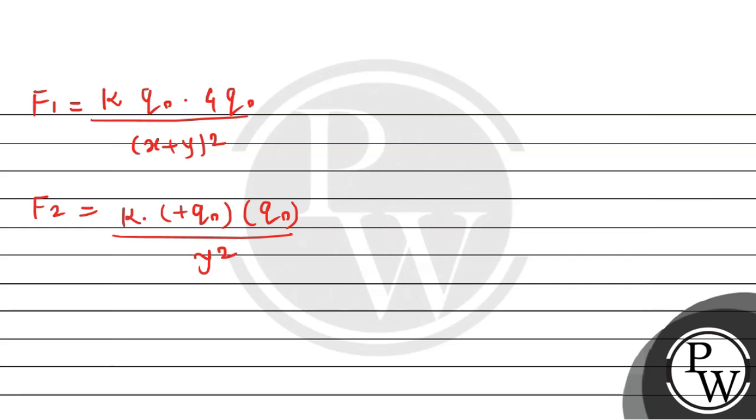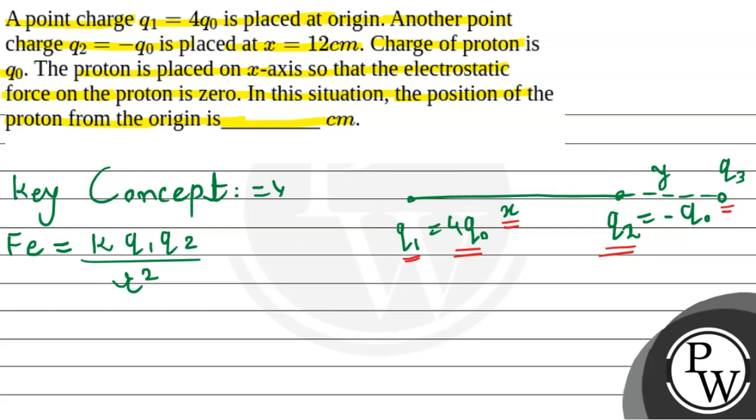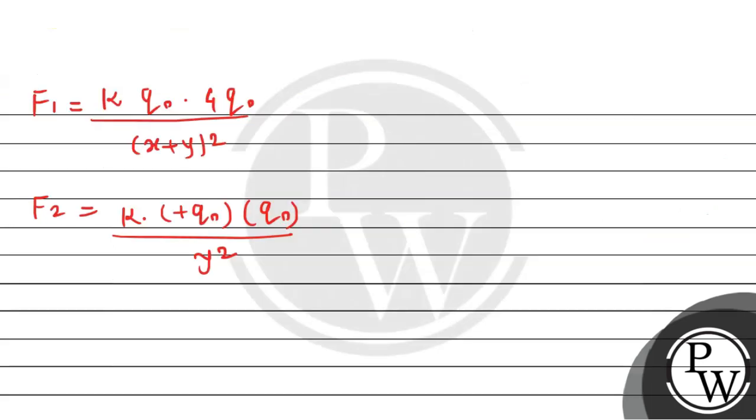अब चूंकि बोला गया था कि यह point charge को इस तरीके से place किया गया है कि उस पर लगने वाला electrostatic force zero के बराबर है। अब यह zero का होगा जब F1 और F2 equal हो जाए, so हम F1 को equate कर देंगे F2 से।